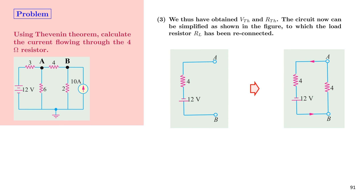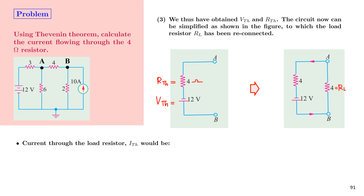We have obtained VTH = 12V and RTH = 4 ohms. Reconnecting the load resistor of 4 ohms, the current through it is ITH = IL = 12/(4 + 4) = 12/8 = 1.5 amperes. This is how we solve any complex electrical network using Thevenin's theorem.